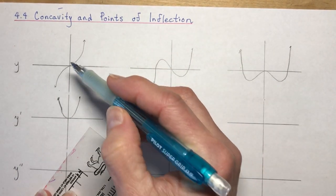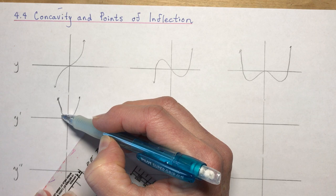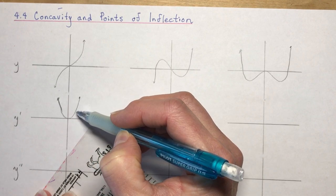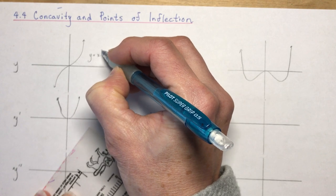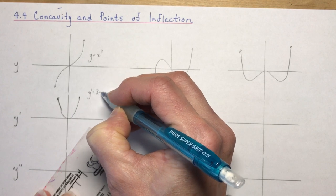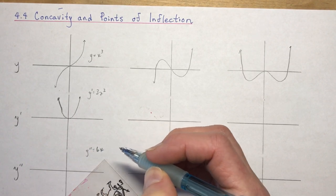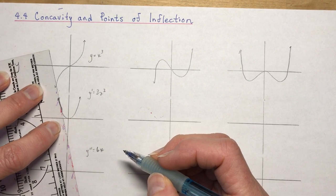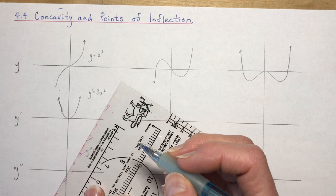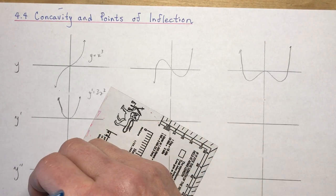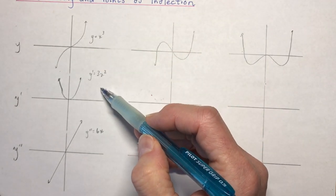That makes sense because this was a degree 3, and we went to a degree 2. Now if we go from a degree 2 and take another derivative — if y equals x cubed, then y prime equals 3x squared, and y double prime equals 6x, which is linear. So we went from a cubic function to a quadratic function to a linear function.